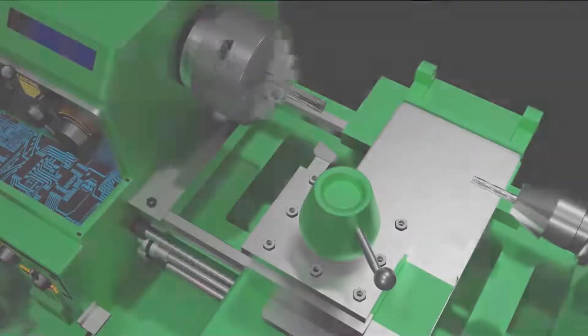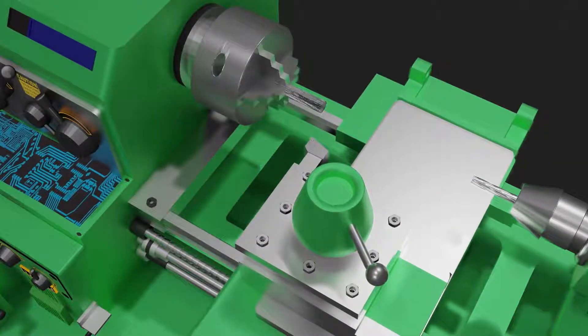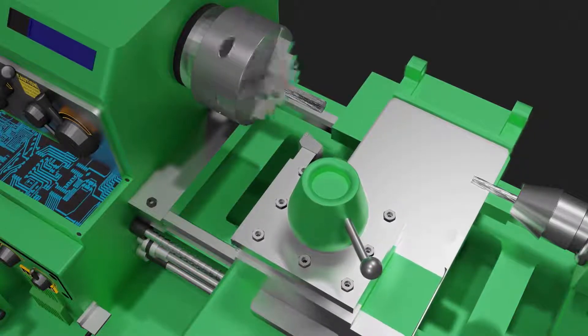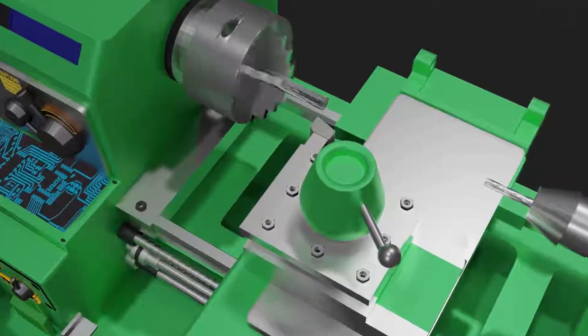Taper turning is the removal of metal from the outer diameter of a rotating cylindrical work piece. Turning is used to reduce the diameter of the work piece, usually to a specified dimension and to produce a smooth finish on the metal.